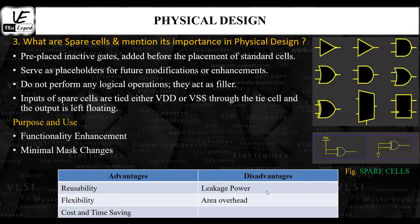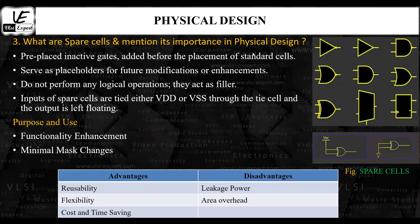The disadvantages of using spare cells are leakage power and area overhead. Leakage power refers to the increased leakage power dissipation in the design, while area overhead means spare cells occupy additional area in the chip layout. In conclusion, spare cells are strategically placed throughout the design to anticipate future modifications, allowing for efficient adjustments without requiring extensive changes to the entire chip.